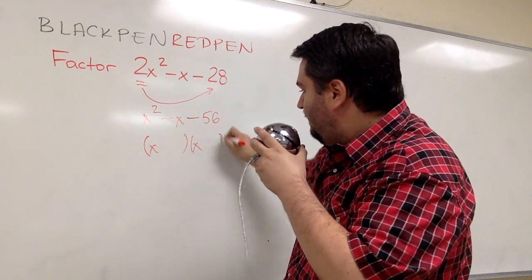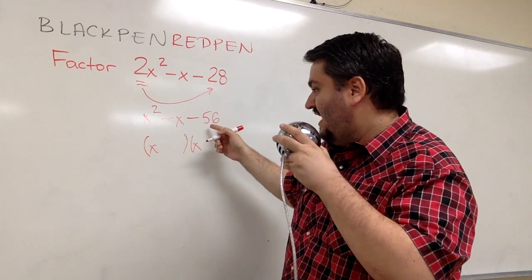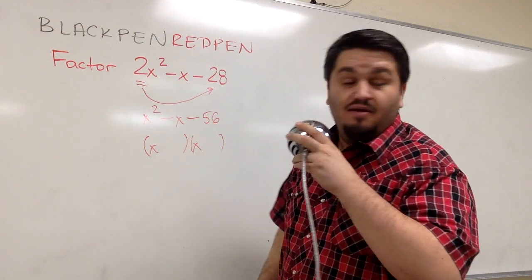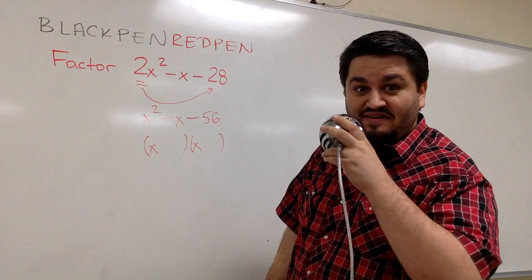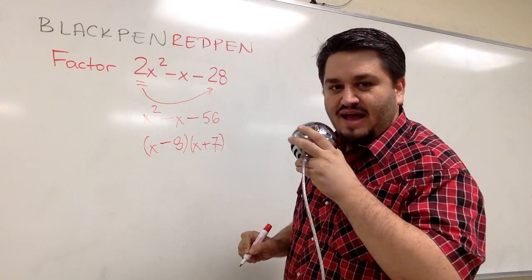Factor. Two numbers that add together, give you negative 1. Multiply together, give you negative 56. Are negative 8 and positive 7, I hear? Correct. Negative 8, positive 7. Got it? Good.